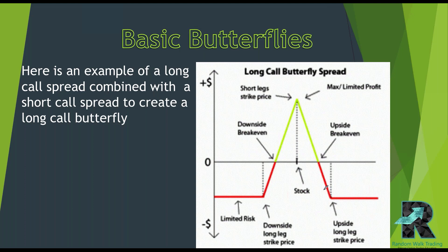Looking at max profit versus cost, the risk-reward ratio: if you pay three bucks and you can only make three dollars at the short strike at expiration, that's a one-to-one risk reward. My preference is a three, four, even five-to-one risk reward — that's what I like to gear for when looking at trades.